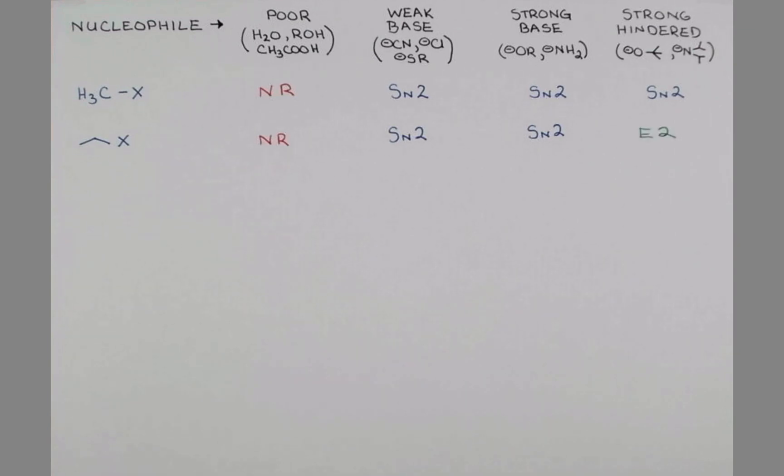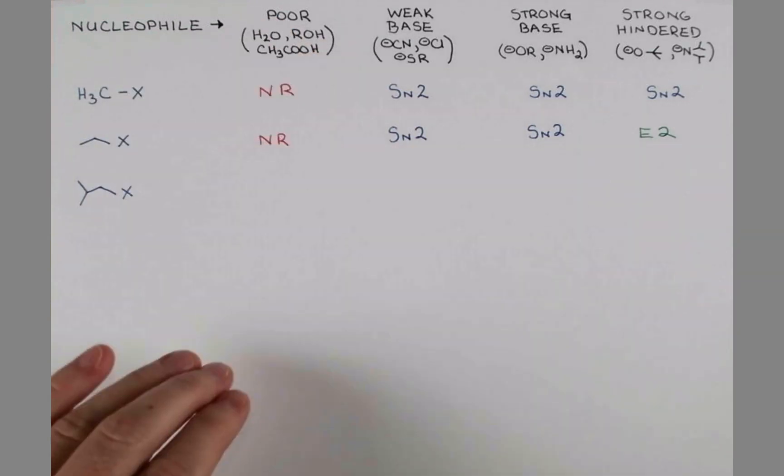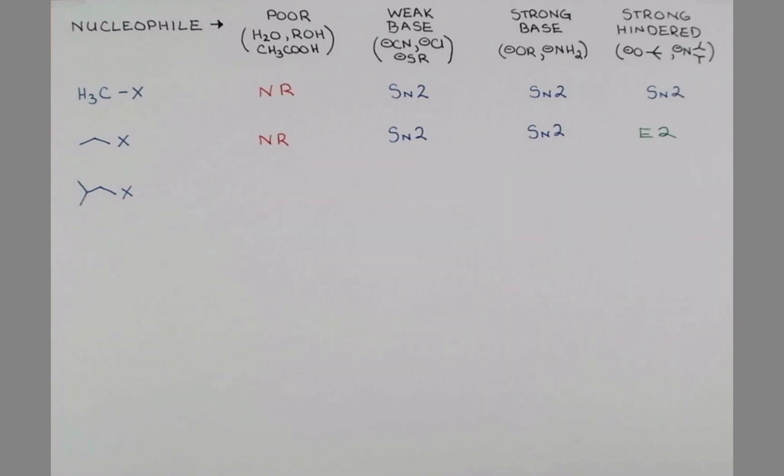Now, let's consider a hindered primary substrate. We have a little bit of branching over here. This is still a primary substrate, so with a poor nucleophile, we're going to again expect no reaction. And again, with our weakly basic nucleophiles, we'll expect SN2.